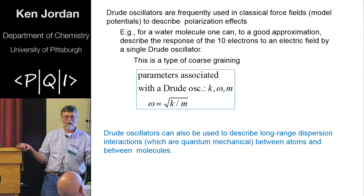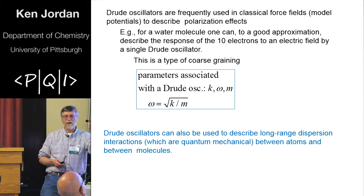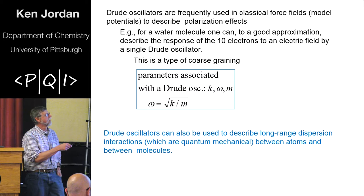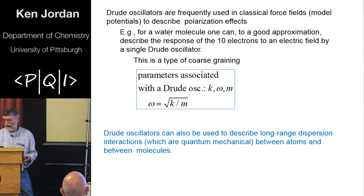Okay, so obviously this is a type of coarse graining. In fact, all force fields are coarse graining. But with the Drude oscillators, you can treat both the polarization, which is a classical effect, and the dispersion interactions, which is a quantum mechanical effect. And the key parameters I've already mentioned, there's going to be a frequency of the oscillator, a force constant, the mass, and the fictitious charge.